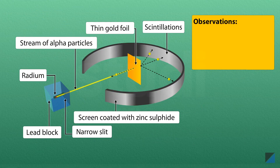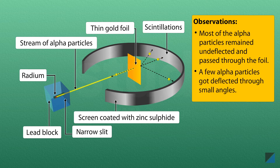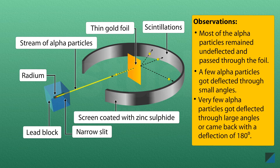It was observed that most of the alpha particles remained undeflected and passed through the foil. A few alpha particles got deflected through small angles, and hardly any alpha particles got deflected through large angles or came back with a deflection of 180 degrees.